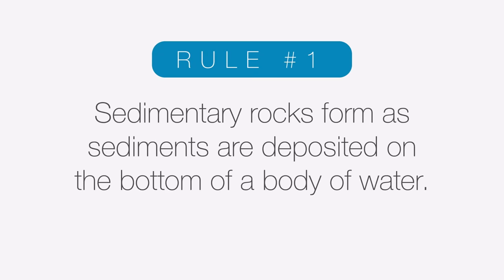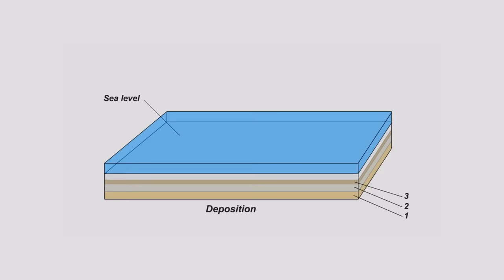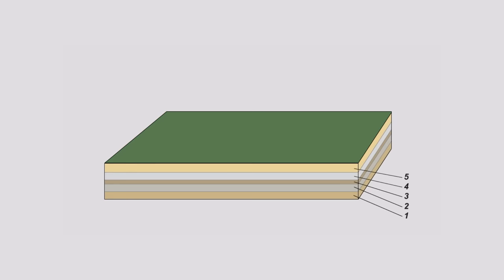Rule number one says that sedimentary rocks tend to form when sediments are deposited in the bottom of a body of water, specifically the ocean. Sand, silt, clay, pebbles, cobbles, and even boulders are slowly deposited on the bottom of the ocean, and then over many thousands and millions of years, these sediments are compressed by the weight of the water into layers of sedimentary rock. So when we see sedimentary rock layers, we know that at one point they were likely underwater.